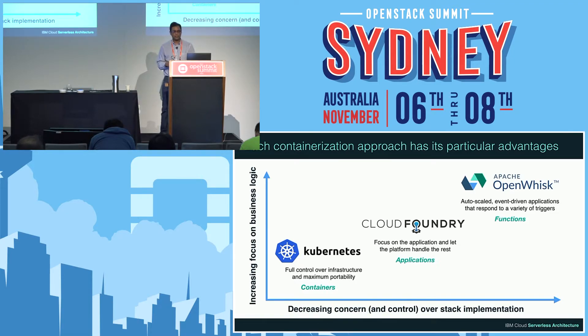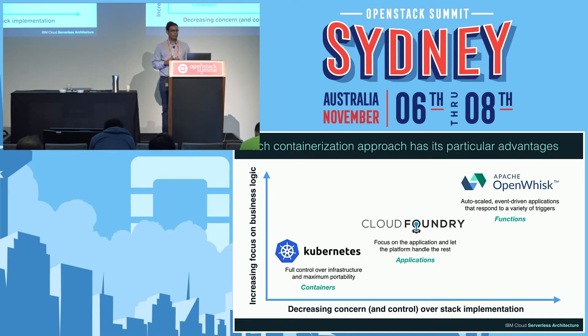From a developer's perspective, with Kubernetes they have full control over the environment — they can decide what's in the container and how it's structured. When you get up to OpenWhisk, they don't have that control; they're focusing purely on the business logic in the application.